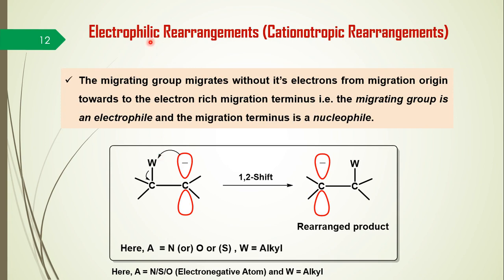Another kind is the electrophilic or cationotropic rearrangement, where the migrating group migrates without retaining its electron pair from the migration origin towards an electron-rich migration terminus. The migrating group is considered the electrophile and the migration terminus is the nucleophile. Here the migration origin must be a nitrogen, oxygen, or sulfur atom, and the migrating group is typically an alkyl group.